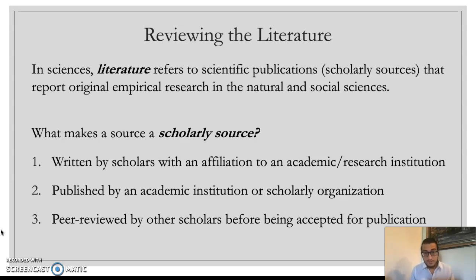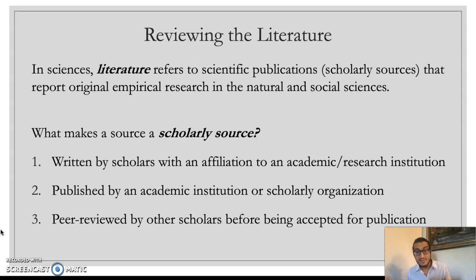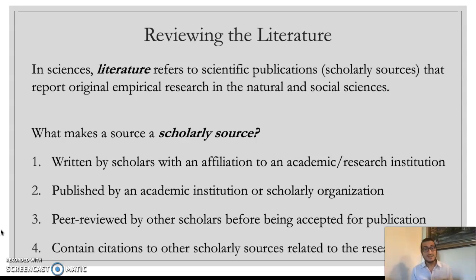If all three reviewers and the editor agree the paper is good enough, it will be accepted and published in that academic journal. This review process typically takes about a year. You submit the paper, the editor finds reviewers, reviewers need weeks to review and provide feedback, if you get a revise and resubmit the author makes revisions and it goes out for review again — reviewers might still have more feedback. This takes several months. It's a really time-consuming and rigorous process to get a paper published as a scholarly source, because that's the rigor required to produce scientific knowledge.